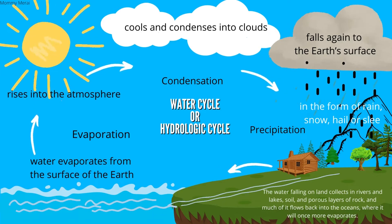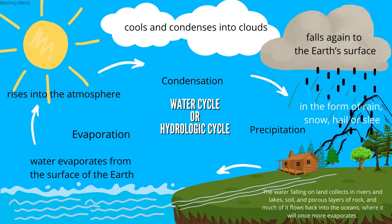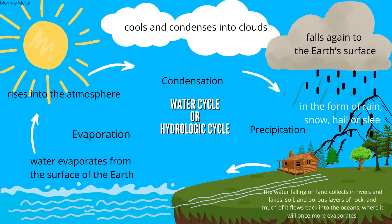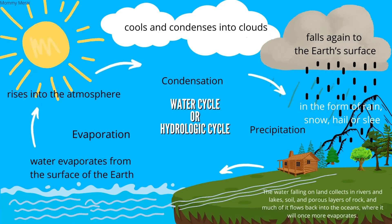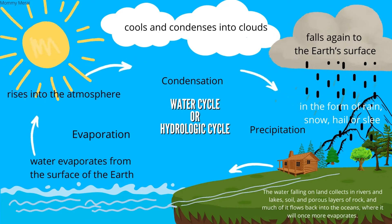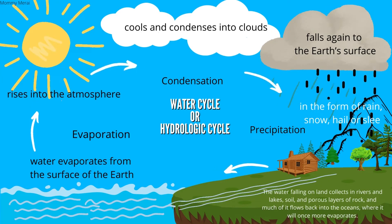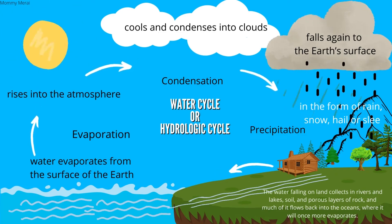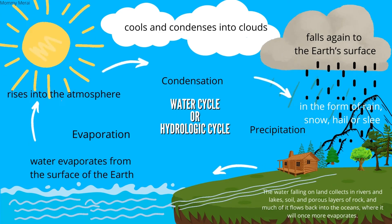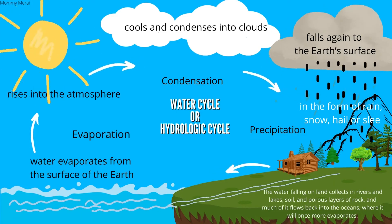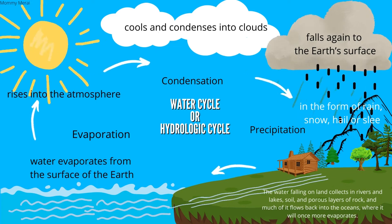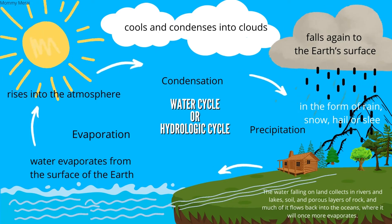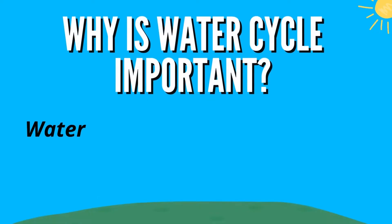It falls again to the Earth's surface in the form of rain, snow, and hail through the process of precipitation. The water falling on land collects in rivers and lakes. It goes through our soil and porous layers of rock, and much of it flows back into the oceans where it will once more evaporate. So it is actually a continuous cycle.